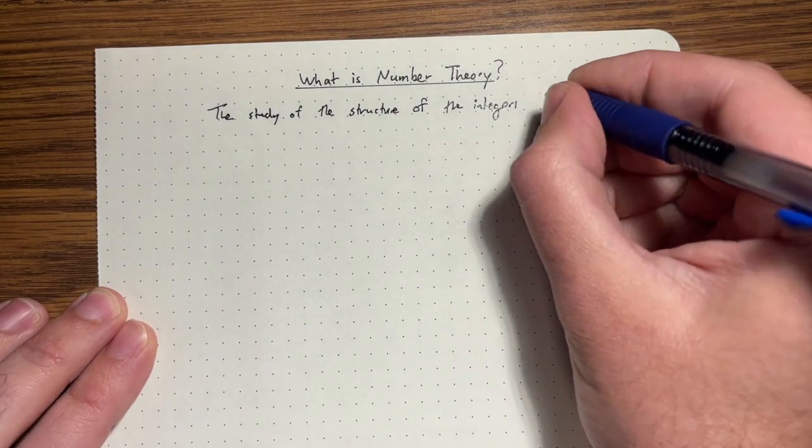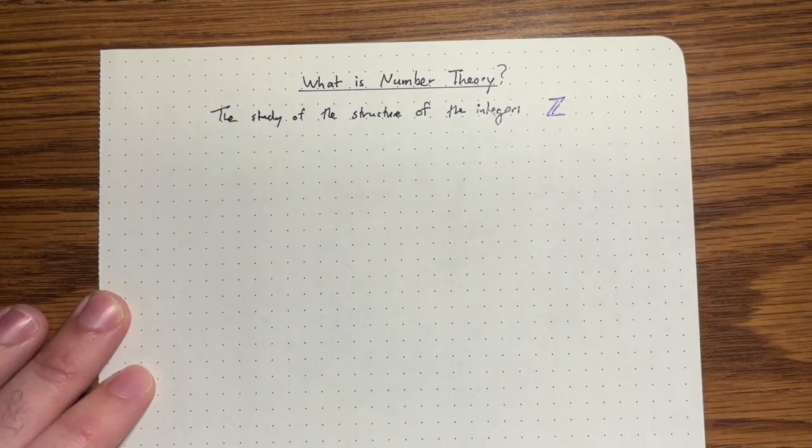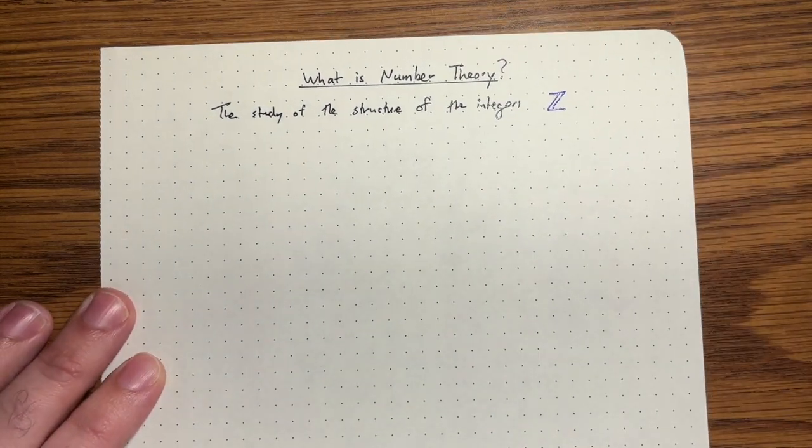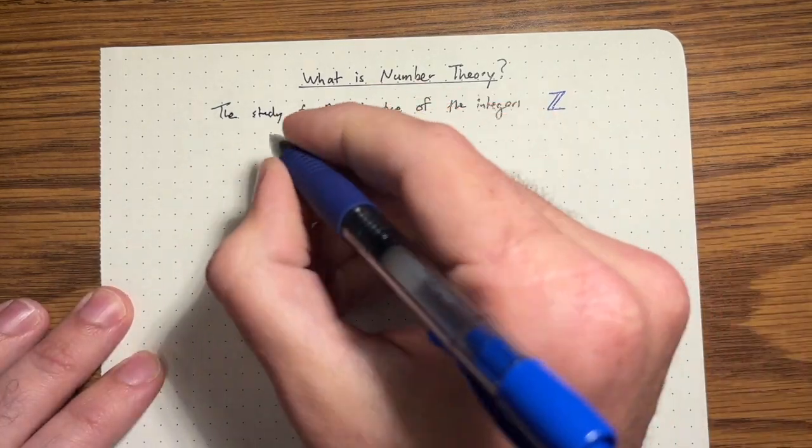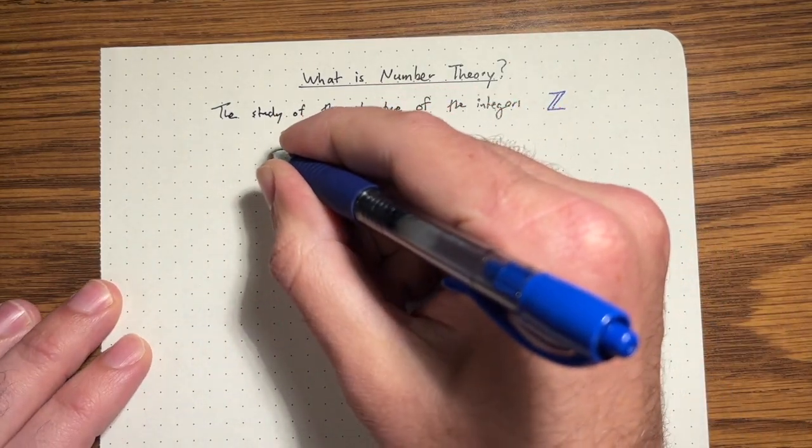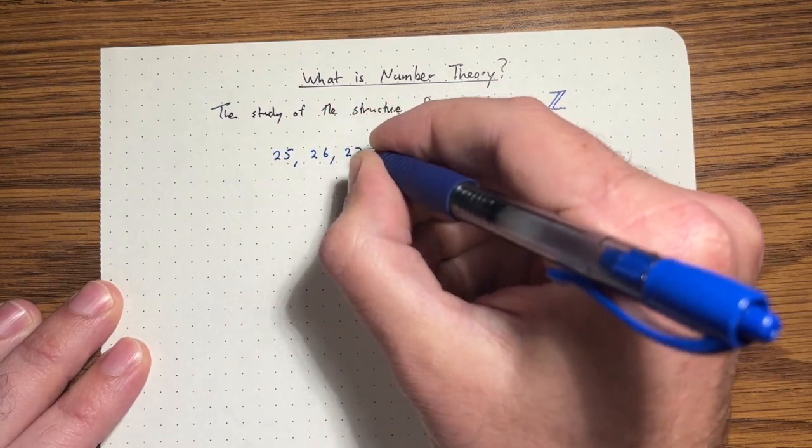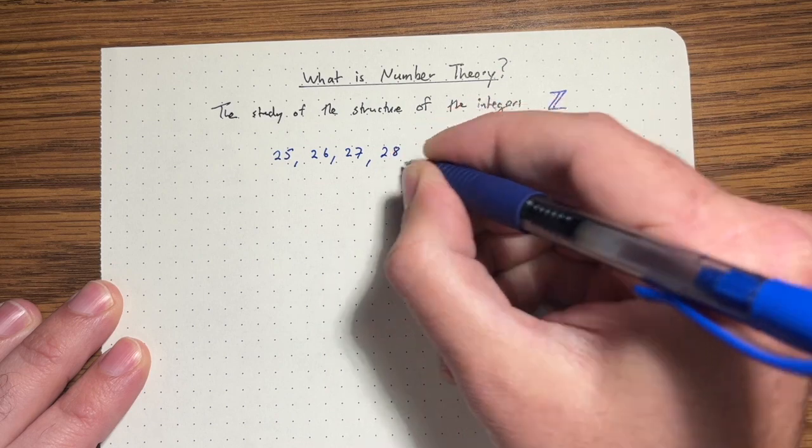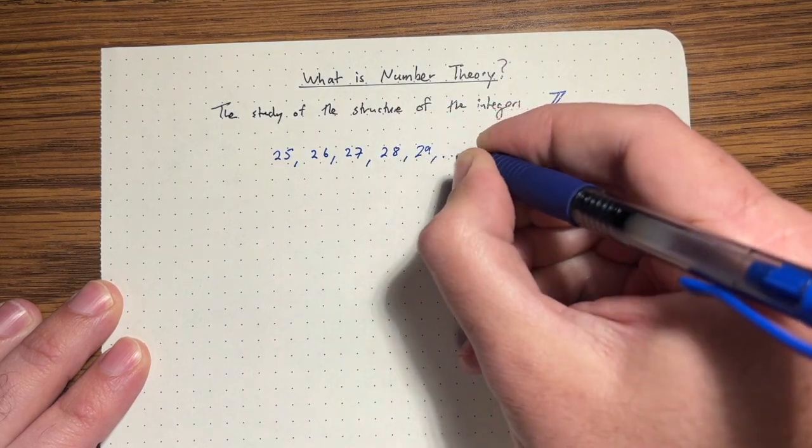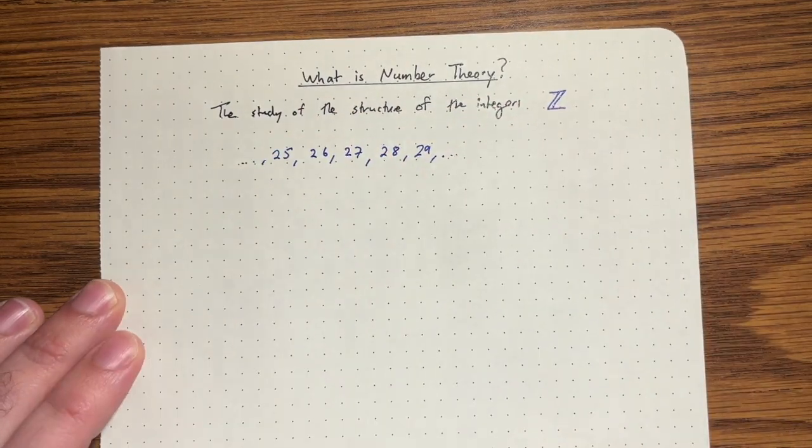The integers we can denote by the symbol Z. Let's just pick some integers. So let's sort of zoom in on 25, 26, 27, let's do a few more, 28, 29, etc. It goes on in both directions.